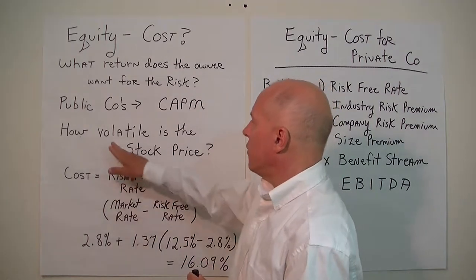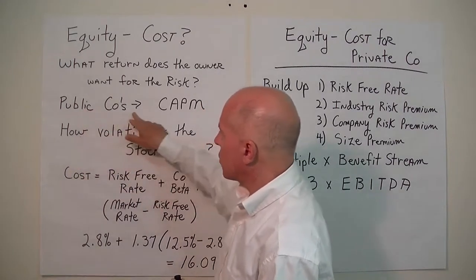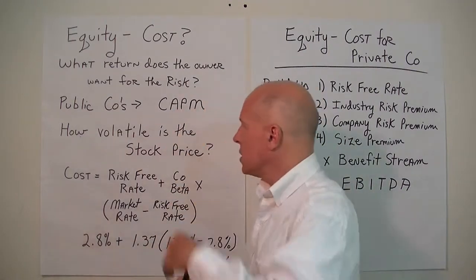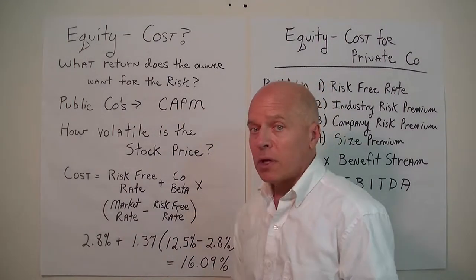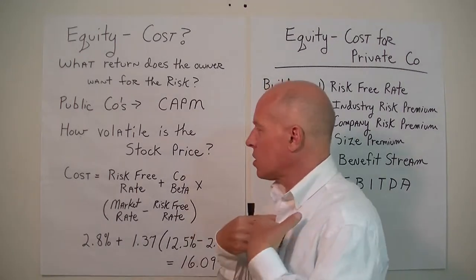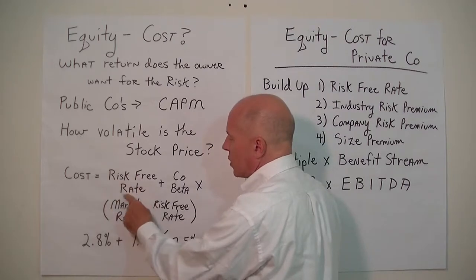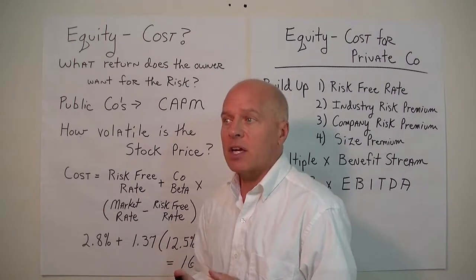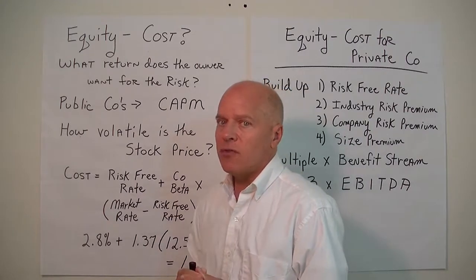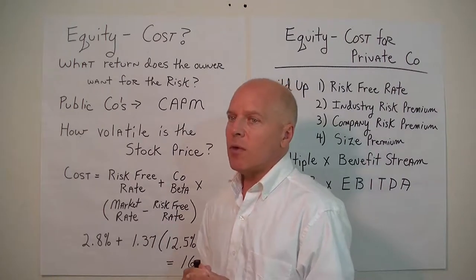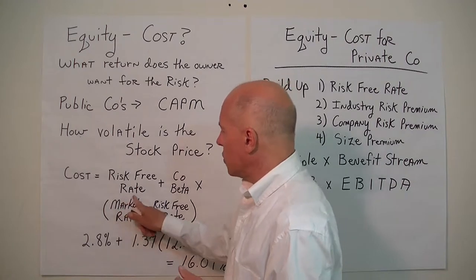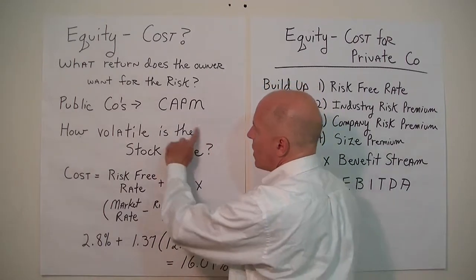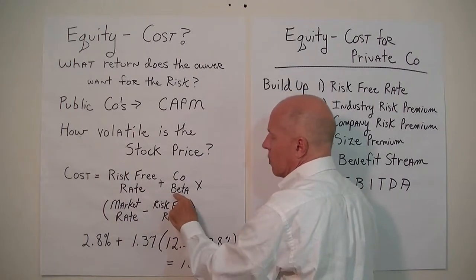Risk for publicly traded companies is very much linked to the volatility of the stock price. We can take the Capital Asset Pricing Model formula and plug in variables to figure out the cost of equity. We start with the risk-free rate — if I didn't take on any risk, what return would I expect? If I buy a government security like a government bond or treasury bill, that equates to a risk-free rate.